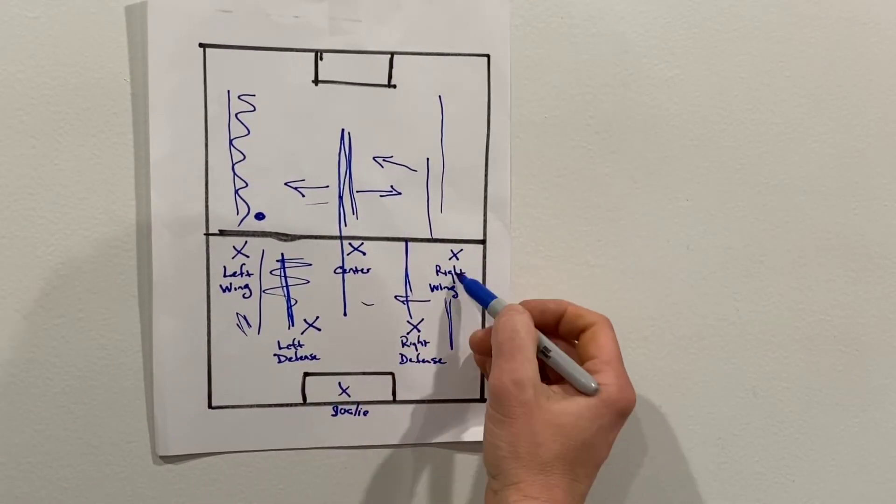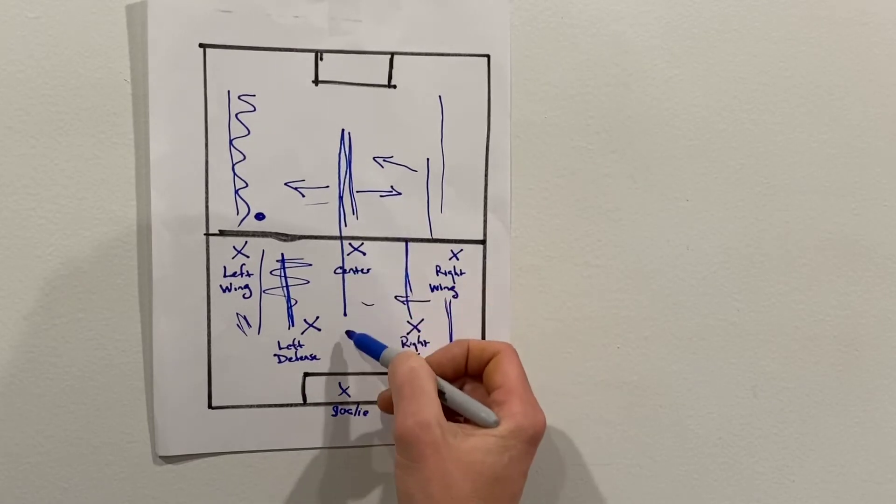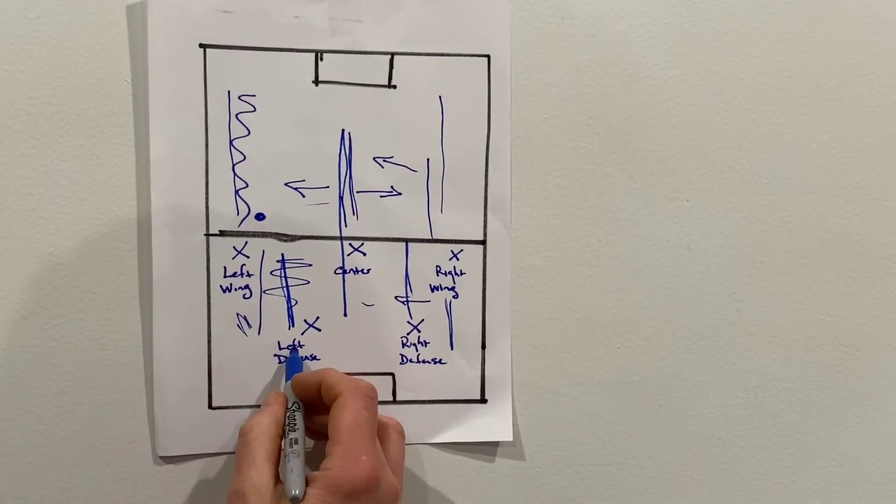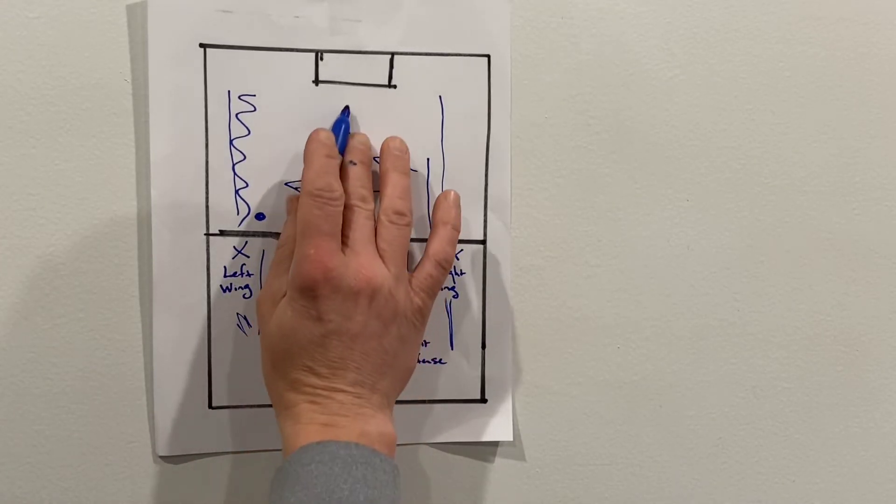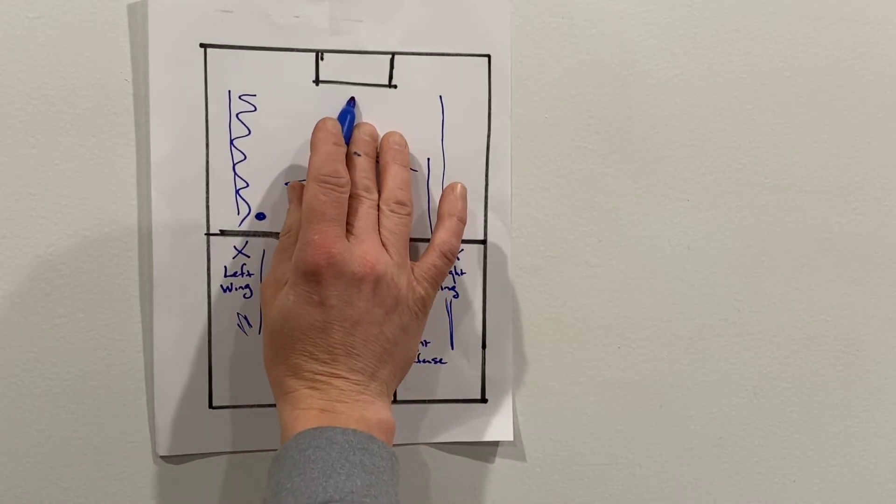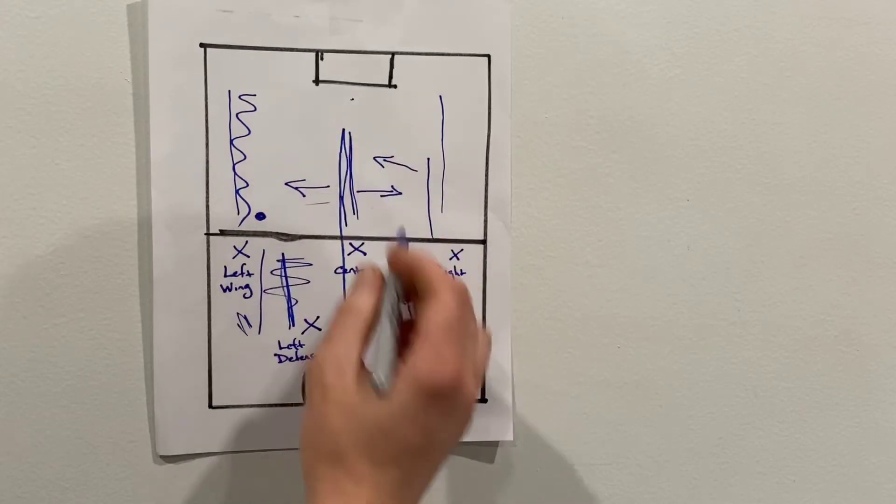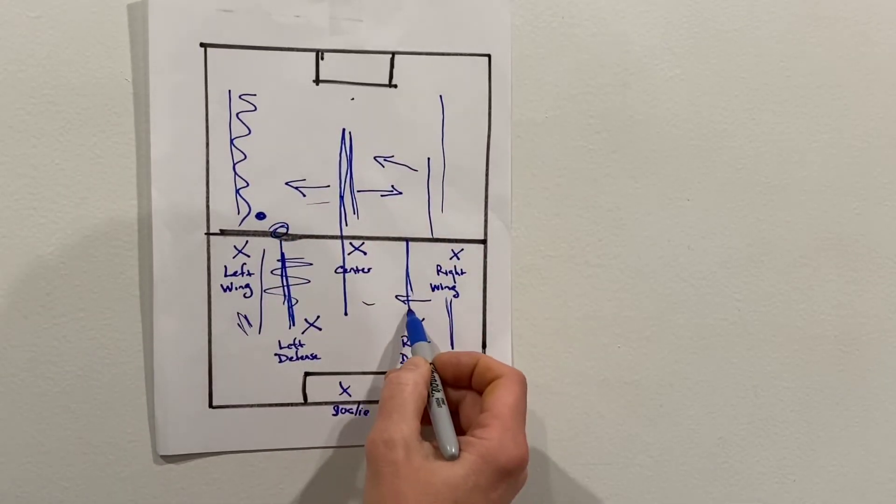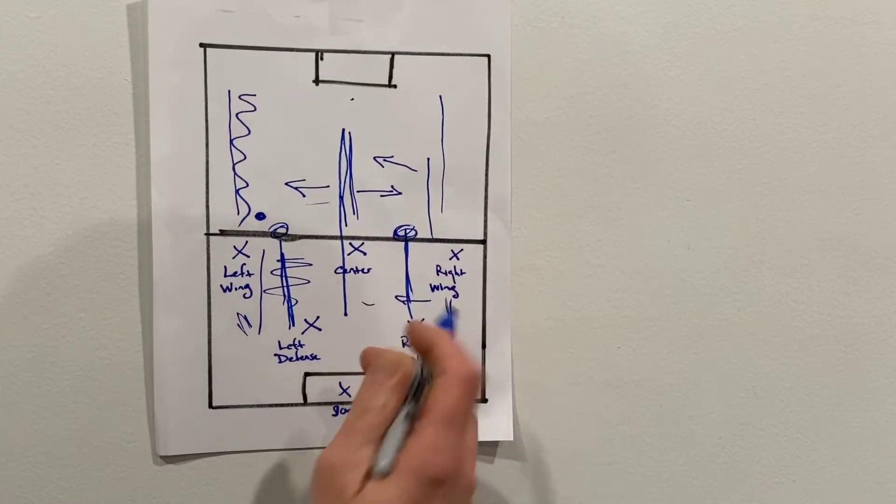You will have help from your right wing, from the center, from the left wing. Typically, if we're bringing the ball in to score or into the offensive zone, the left defenseman is going to come about halfway. The right defenseman is going to come about halfway.